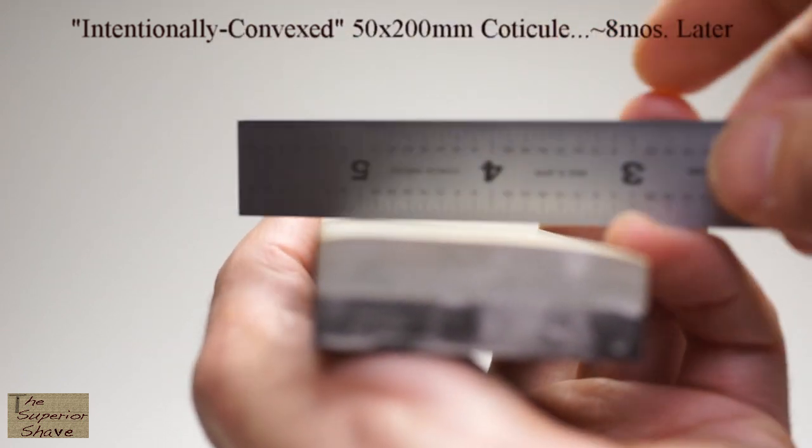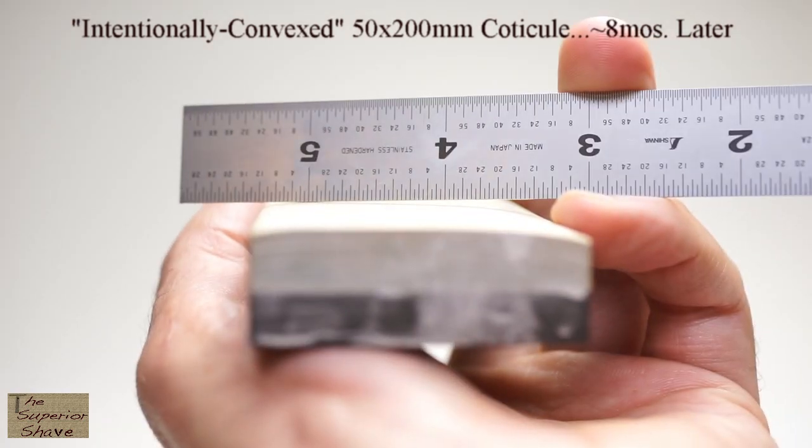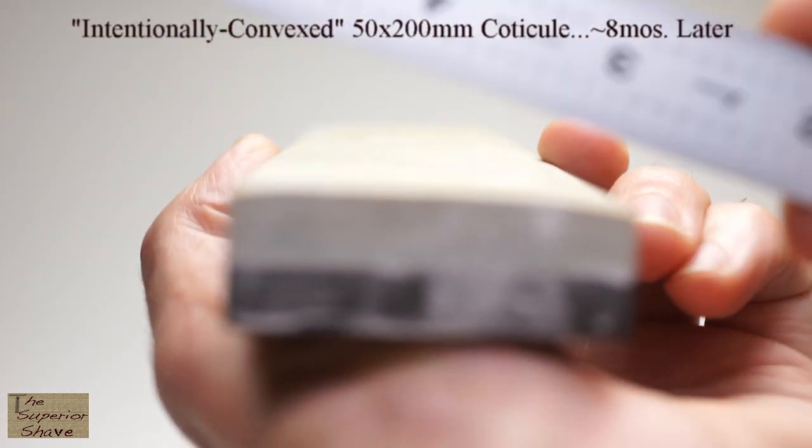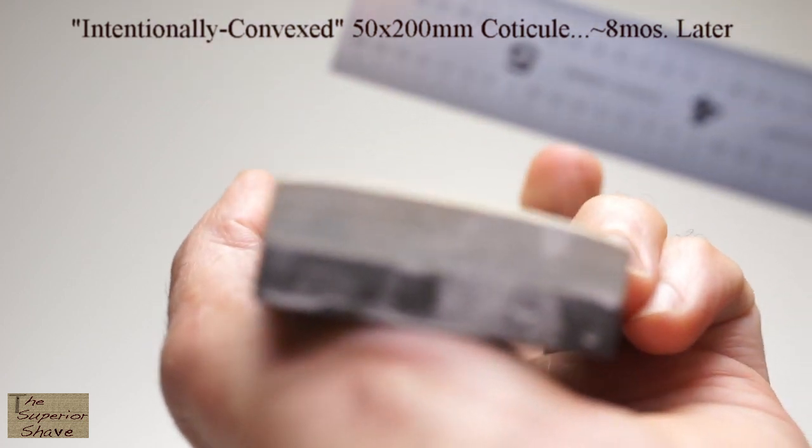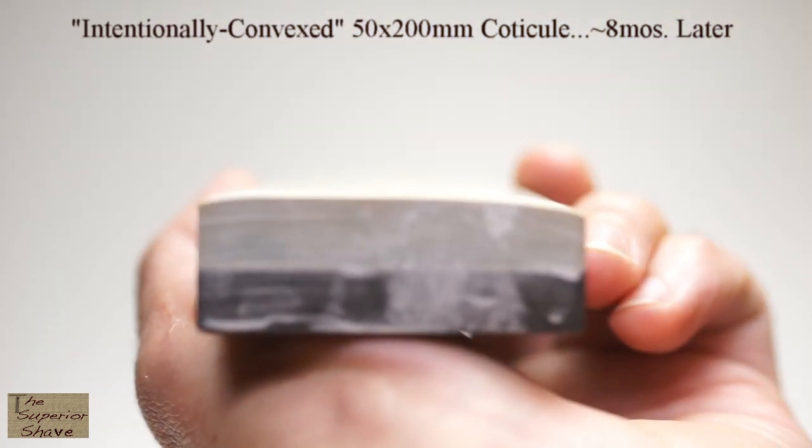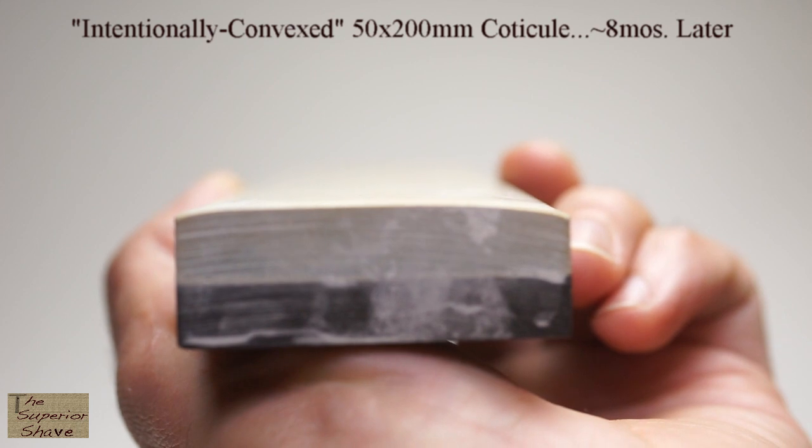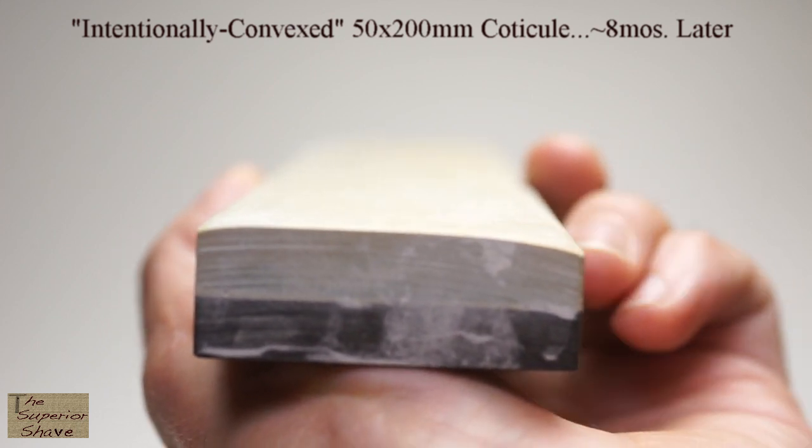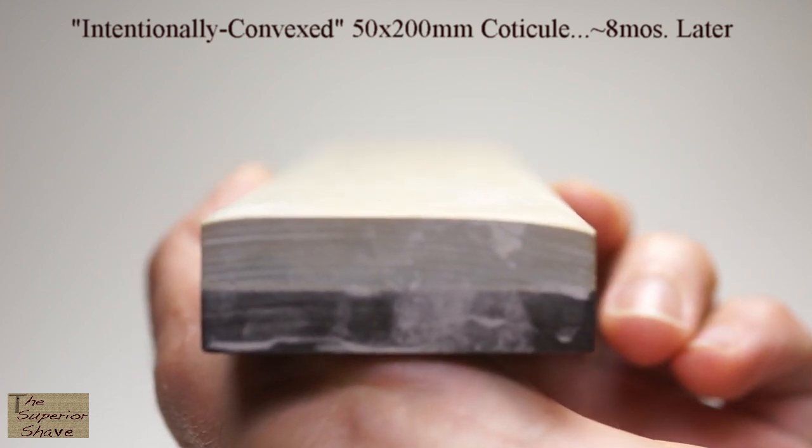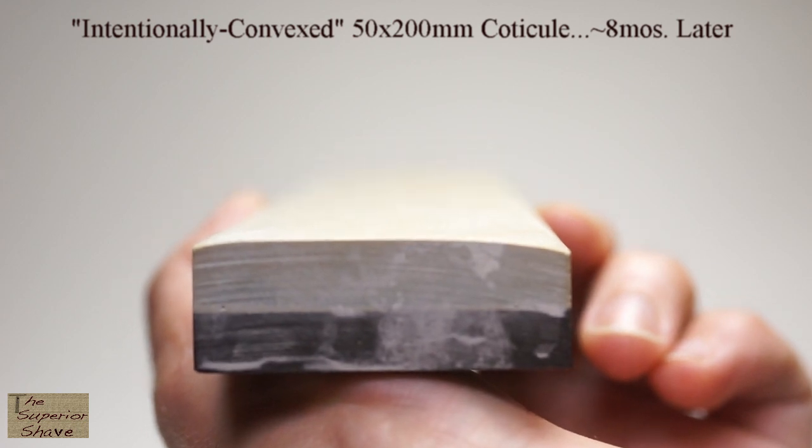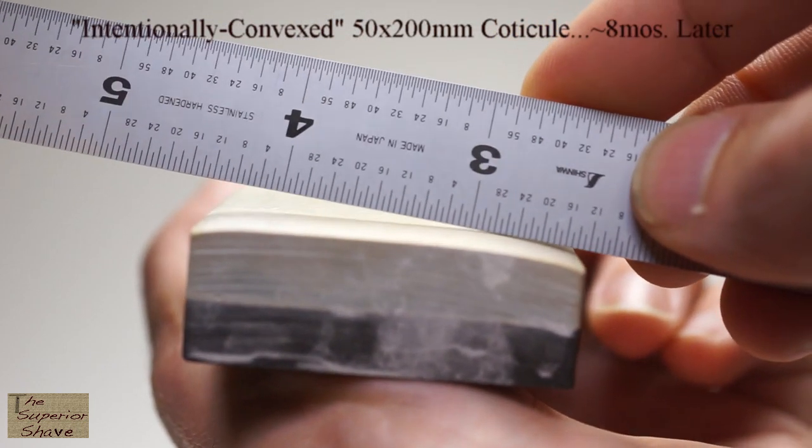But I would like to show you that the contact patch of the razor on this stone is always small and never in two places at once, and I've been able to maintain that for eight months and literally more than a thousand uses just by watching the stone and making slurry in a little circle away from the summit, so to speak.